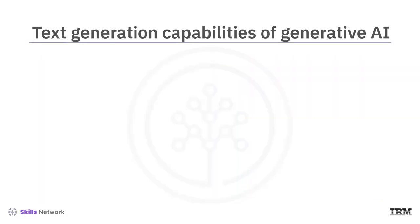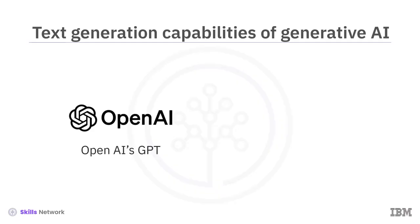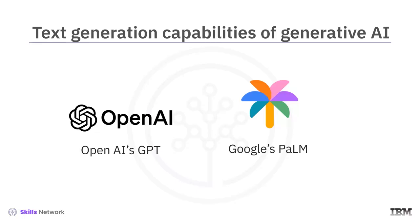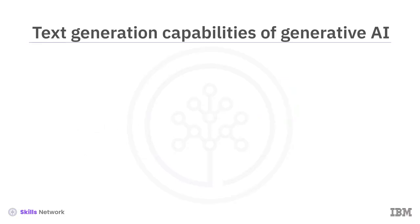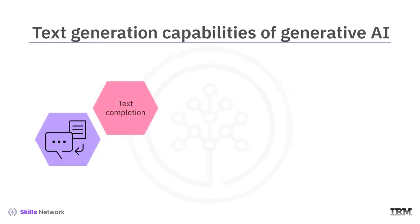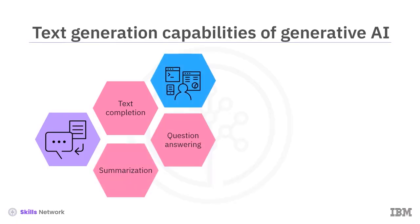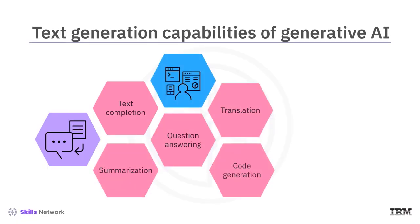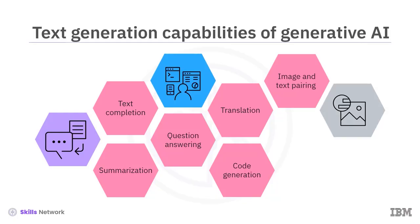Some popular LLMs are OpenAI's Generative Pre-trained Transformer, or GPT, and Google's Pathways Language Model, or PaLM. These models can perform various language-related tasks, such as text completion, summarization, question-answering, translation, code generation, and image and text pairing. Conversational interactions with chatbots and virtual assistants are powered by LLMs.